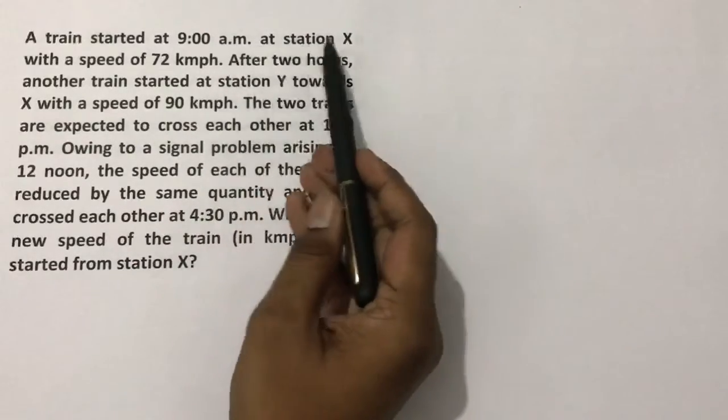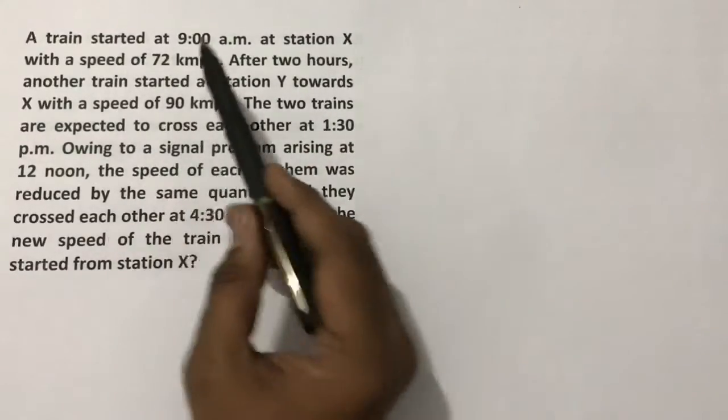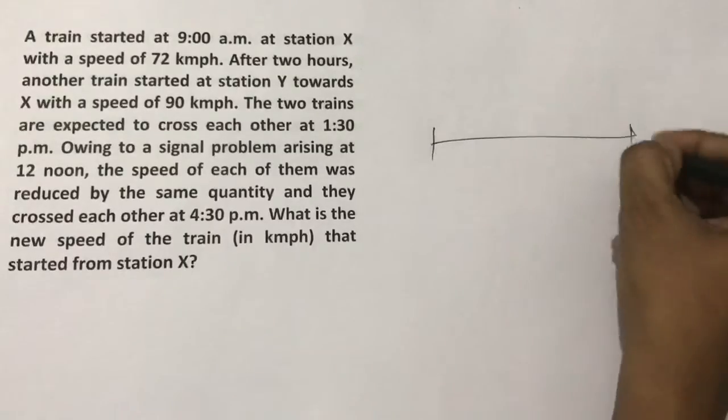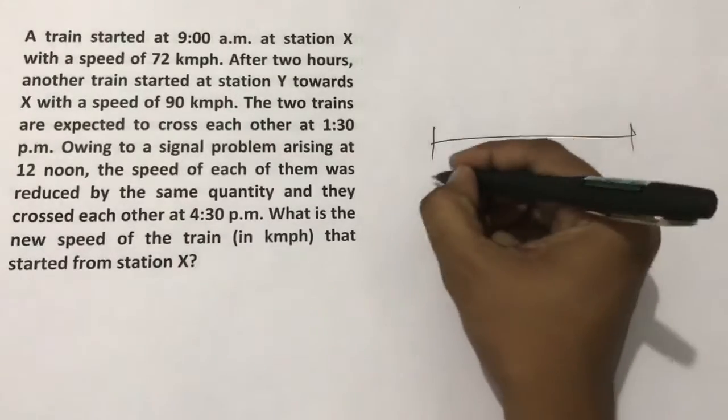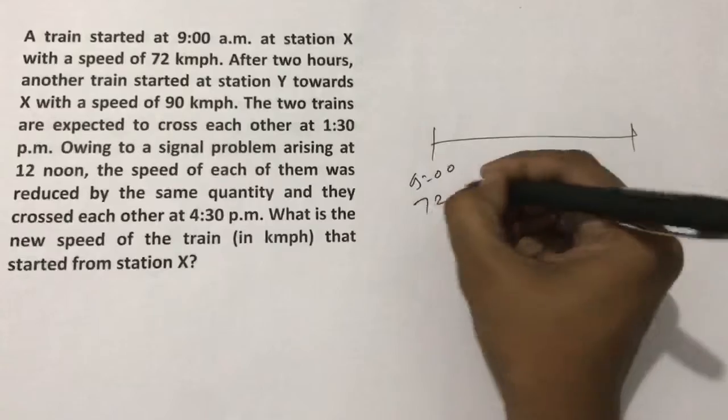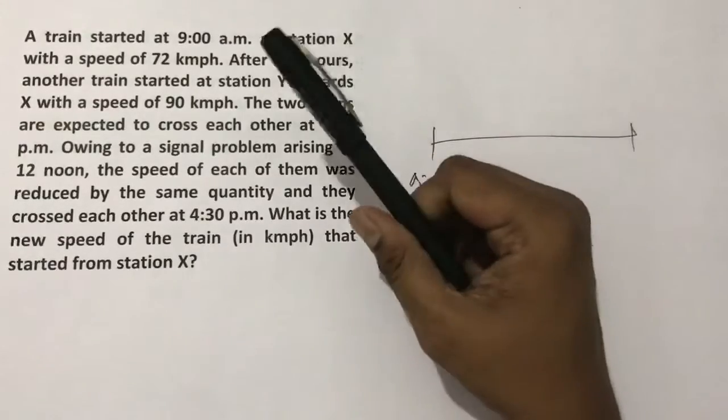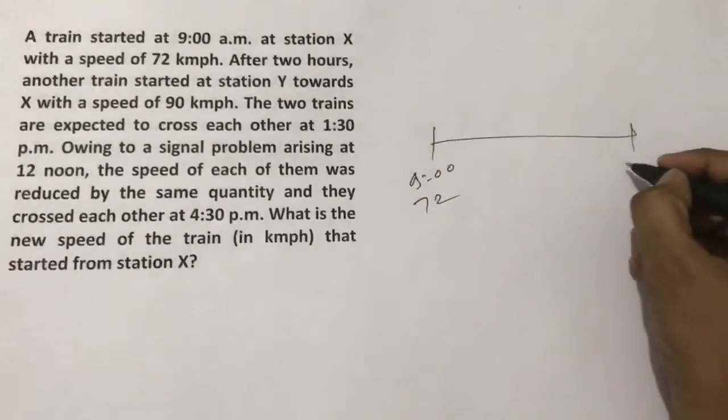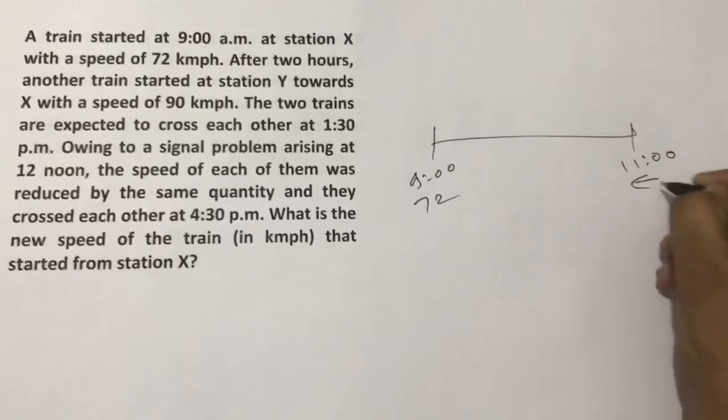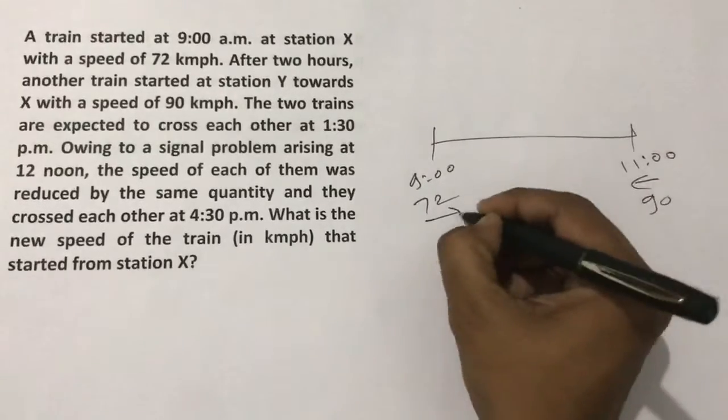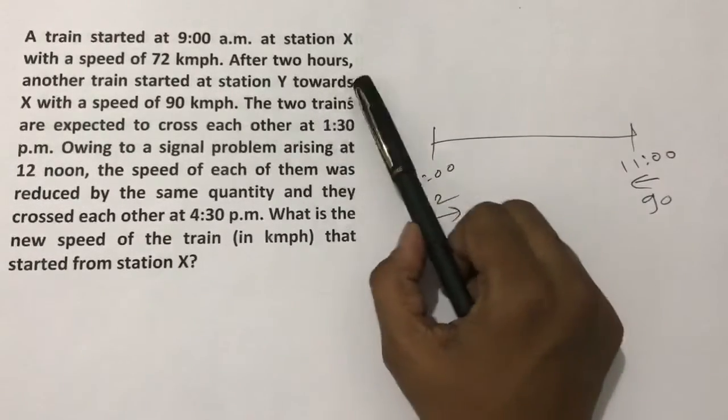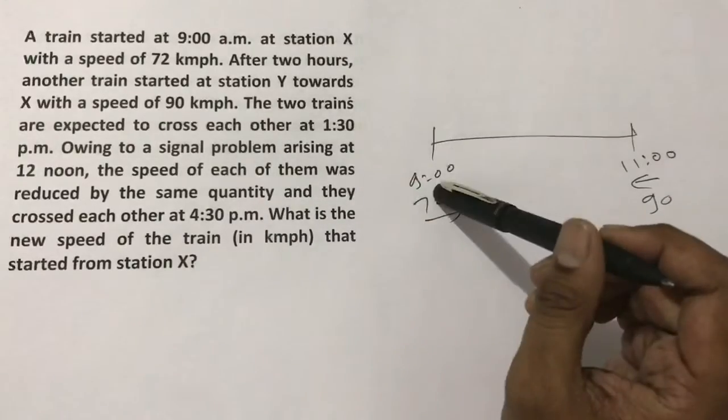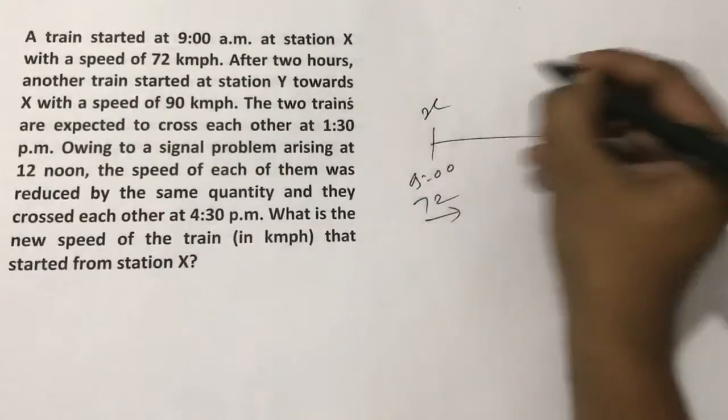Train started at 9am at station X with a speed of 72 kmph. After 2 hours, another train started at station Y towards X with a speed of 90 km per hour. Station Y towards X, so let's say this is X, this is Y.